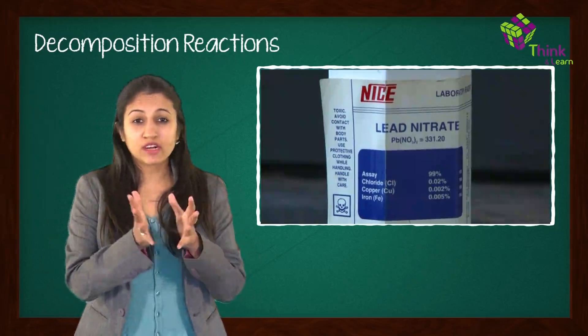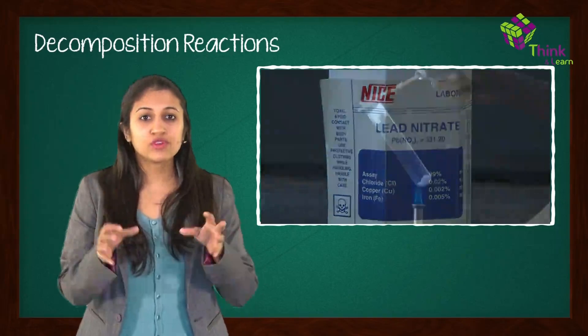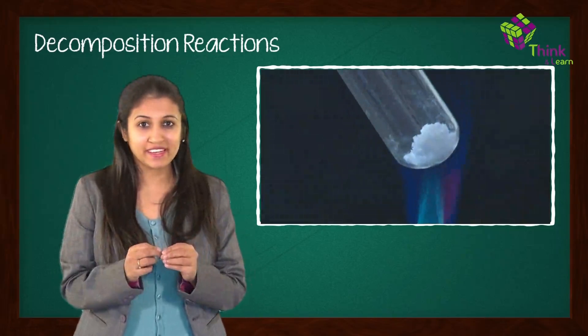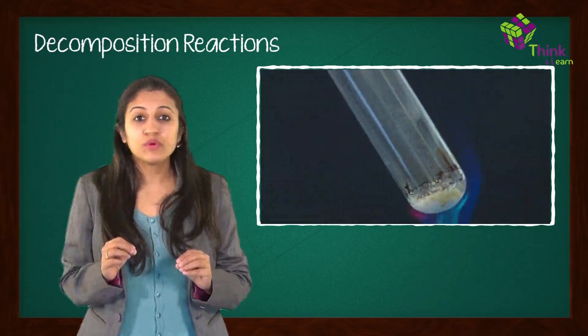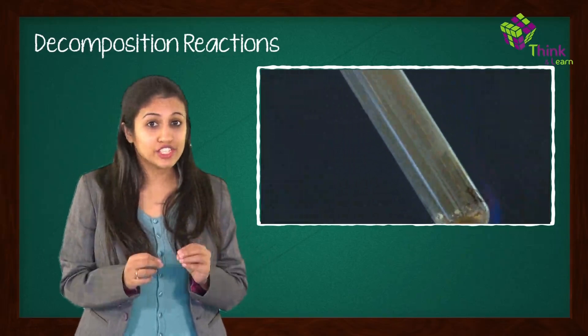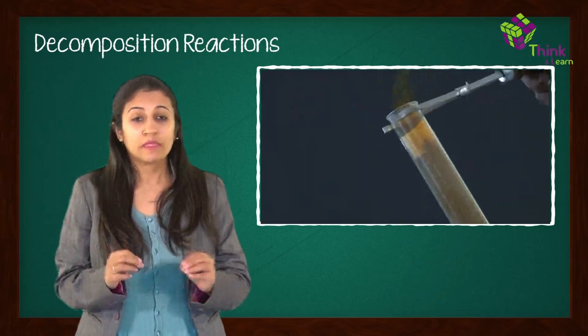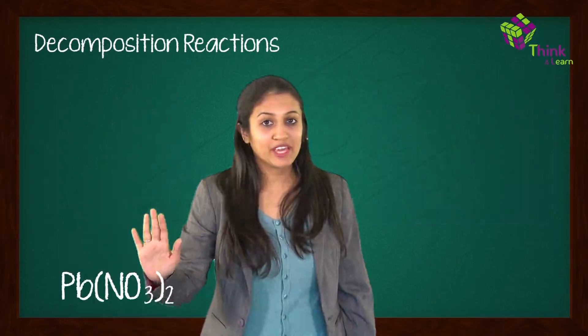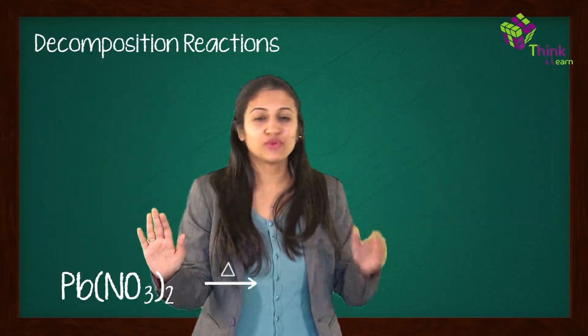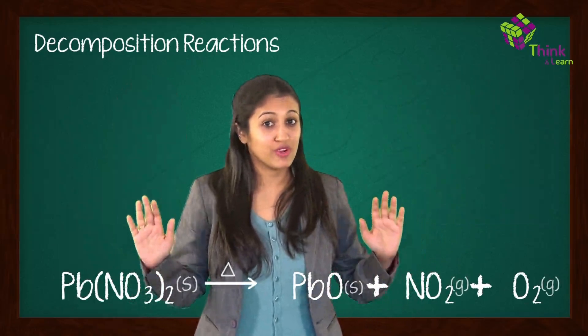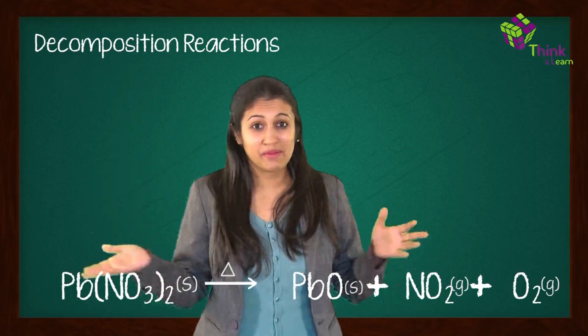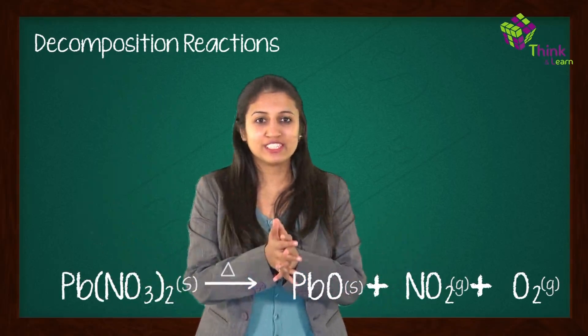Example 2 is the decomposition of lead nitrate. So we'll actually heat up lead nitrate and see what happens. Lead nitrate will decompose into lead oxide, nitrogen dioxide, and oxygen. To represent that in an equation, Pb(NO3)2 when heated will give you PbO plus NO2 plus O2. And I'm sure that you've already observed that this is not a balanced equation. So let's just balance this for practice.